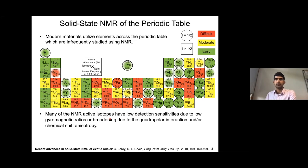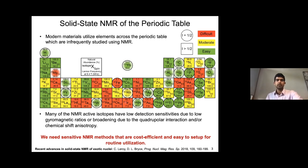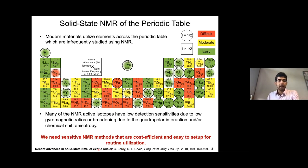This low sensitivity is a result of a number of reasons — it can be due to low gyromagnetic ratios, or broadening due to a variety of factors including most commonly the quadrupolar interaction and/or the chemical shift anisotropy. So the reason we need to improve NMR methods is to look at all of these interesting elements and nuclei across the periodic table in the materials that contain them. We need sensitive NMR methods that are cost-efficient and easy to set up. Please take a look at this review on exotic nuclei from Professor David Bryce for recent advances.